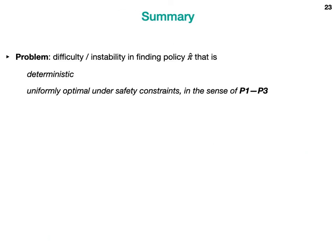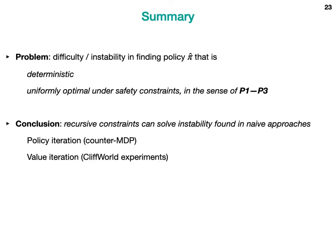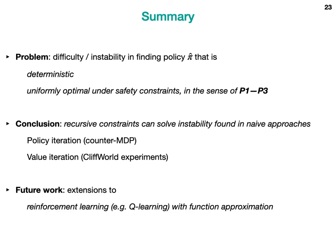In summary, we found an instability issue when using reinforcement learning ideas for finding a policy that is deterministic and uniformly optimal under safety constraints. From our investigation, we conclude that our approach with recursive constraints can solve such instability in naive approaches. We investigated policy iteration relations with the counter MDP and value iteration with cliff world experiments. We hope this clarifies some hidden problems within multi-objective optimizations, and future work is to extend the idea to reinforcement learning with function approximation for more complex tasks. Thank you for watching.